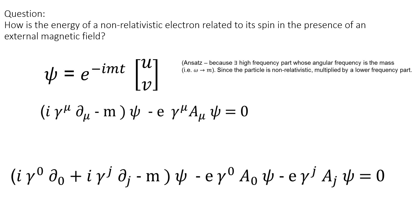We are all set to go and we can ask interesting questions such as, how is the energy of a non-relativistic electron related to its spin in the presence of an external magnetic field? We can assume this ansatz of the wave function psi to be, since there exists a high frequency part whose angular frequency is the mass, in natural units where omega equals m. Since the particle is non-relativistic, it is multiplied by a lower frequency part.